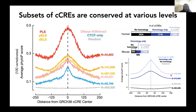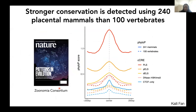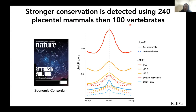We joined the Zoonomia Consortium, led by Eleanor Carlson and Shusten Nimbrato, for 240 species of mammals. That gave us more statistical power to detect conserved elements compared with the 100 vertebrates used in the ENCODE3 manuscript. Because regulatory elements evolve quite quickly, having more genomes with more recent evolutionary timescales allows us to better detect these conserved elements. The conservation is indeed higher with 240 mammals compared with vertebrates in dashed lines. We have a manuscript being reviewed on the conserved elements.